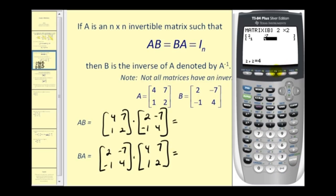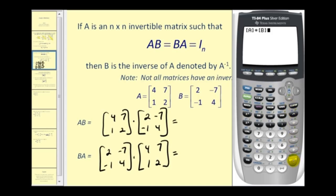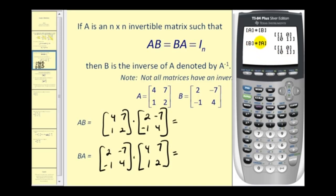Let's go ahead and find those two products. Back to the main screen, press second matrix A times second matrix B, and press enter. We can see that A times B is a two by two identity matrix. Now let's find B times A — and the product is the same. So since the product of these two matrices is the identity matrix, we can say B is the inverse of A.